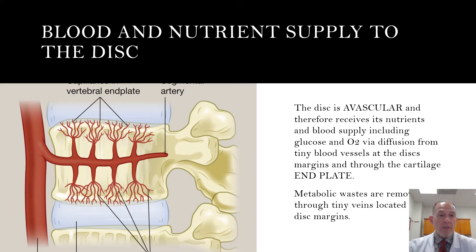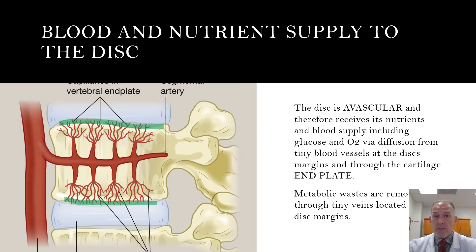Your intervertebral discs have no direct blood supply. Rather, the discs remain hydrated and healthy due to diffusion from the micro-capillary circulation located at the margins of the disc. Here the micro-capillary circulation feeds into the cartilaginous end plate discussed previously. Another method by which we receive nutrients to the disc is through motion — hydraulic pressure forces the larger molecules across the vertebral end plate, and we receive nutrients in that manner as well.